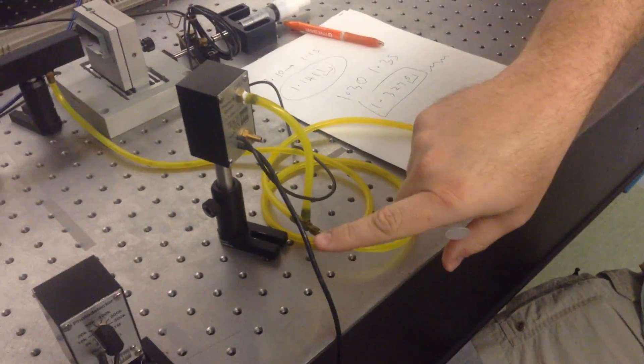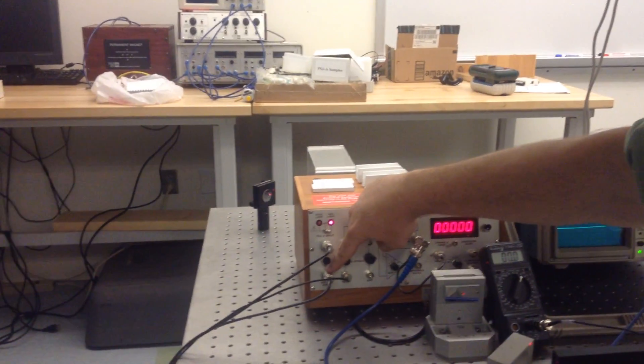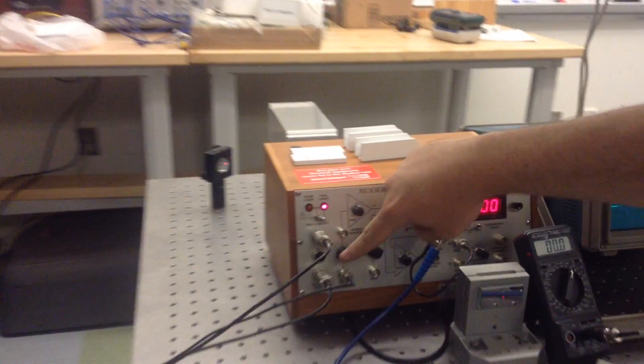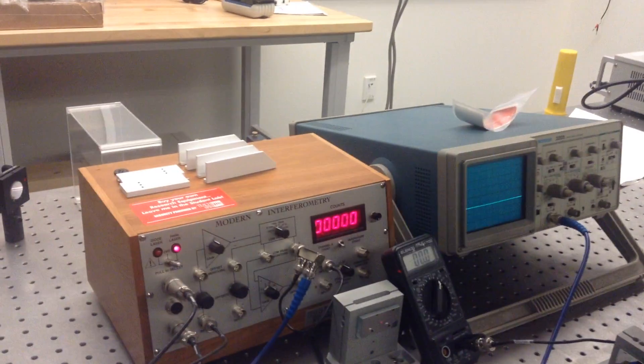This wire here that's coming out of the pressure sensor is connected over here on our modern interferometry equipment. That may not be connected when you want to do this experiment, so you want to make sure you connect there. It's just like a BNC connector.